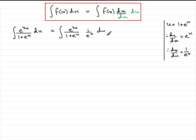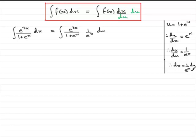Some of you might do this a slightly different way — you might have been taught to just make dx the subject. If you did that, you'd still do this differential, but then rearrange it by multiplying both sides by du. Technically that's not really right, but you'd end up with dx equals 1 over e to the x du. I wouldn't personally encourage that — I tend to call this dirty maths — but it would give you the same result. I'm going to rub that out because I prefer the other system.